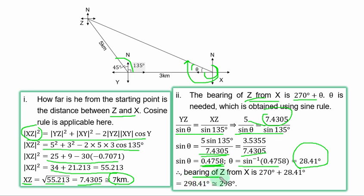Therefore, bearing of Z from S is 270 degrees plus 28.41 degrees. That gives 298.41 degrees. To the nearest degree, you have 298 degrees.